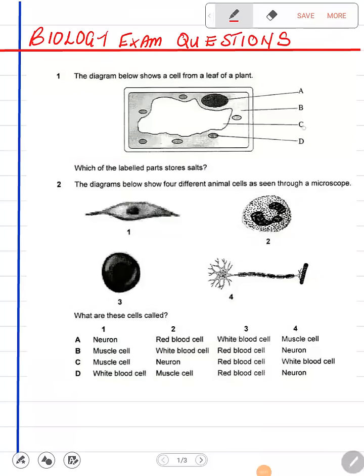Now which one stores salts? The component of the plant cell that stores salts is the cell vacuole. Altogether.